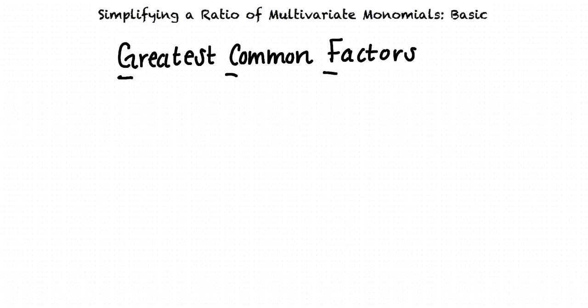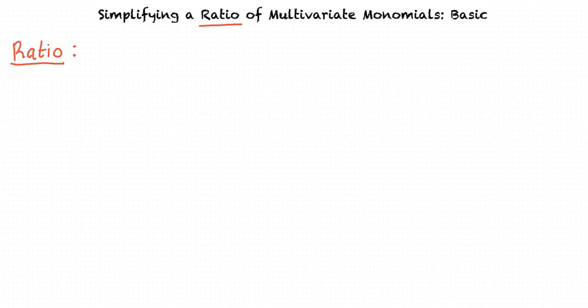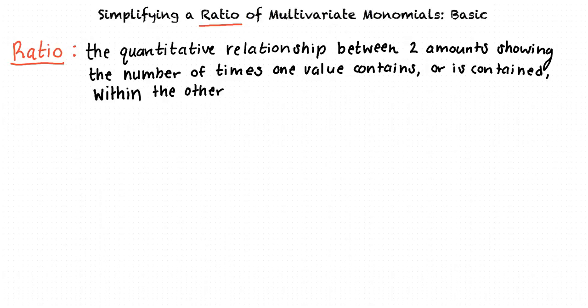Let's begin by defining a couple of keywords found in the title of this topic. Ratio means the quantitative relationship between two amounts showing the number of times one value contains or is contained within the other. For example, 3 to 5 is a ratio, which can also be written as 3 over 5 in fraction form.